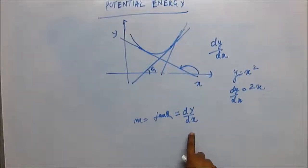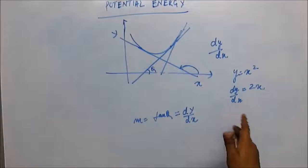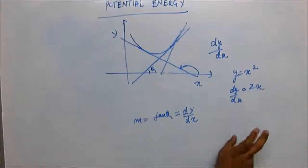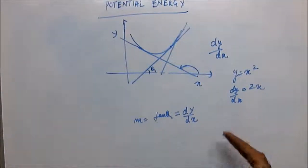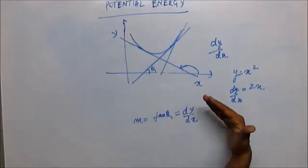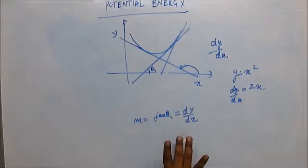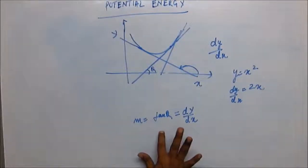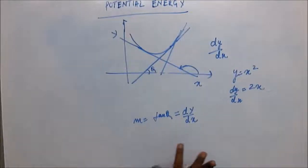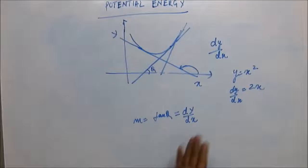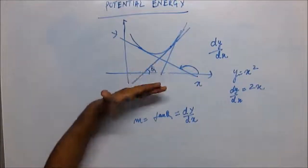So from the expression, if dy/dx is negative, that means the tangent at that point is making an angle greater than 90°. This will be important when we discuss potential energies and stability. To summarize: dy/dx = tan θ is the slope; if dy/dx is negative the tangent makes an angle more than 90°; if dy/dx is positive, the angle is less than 90°.